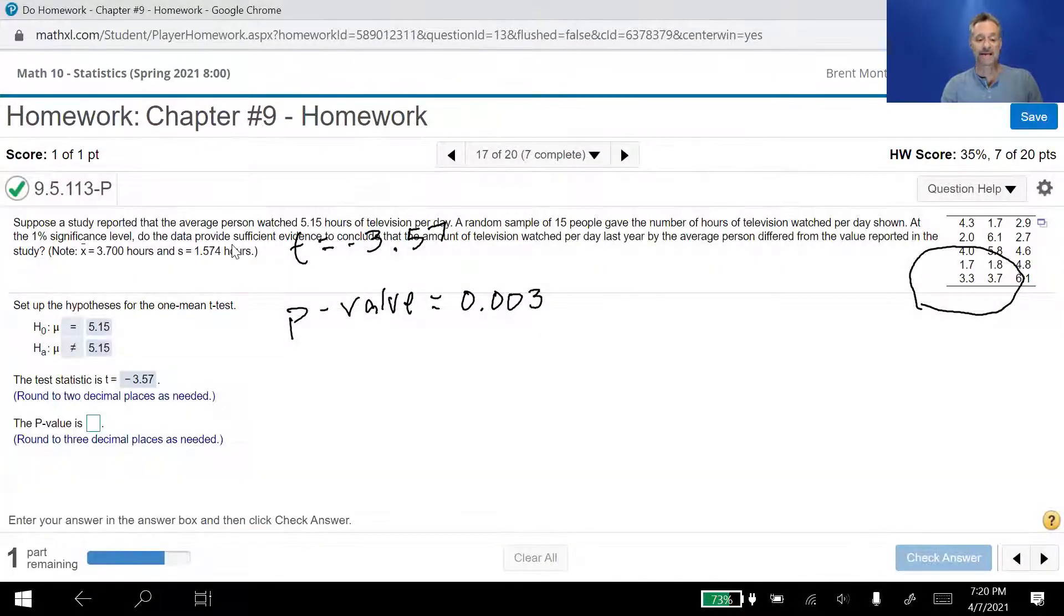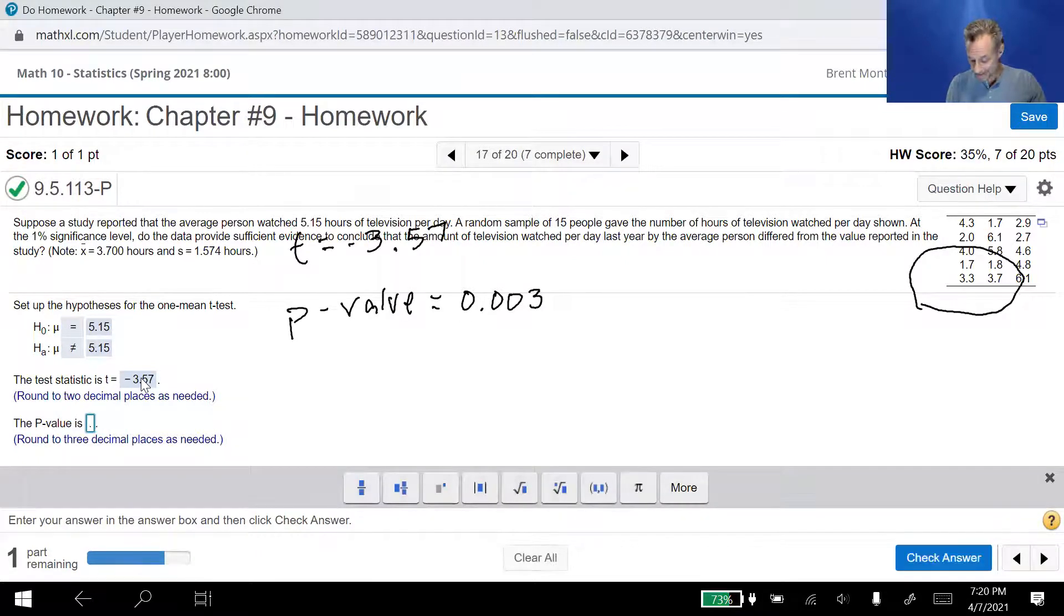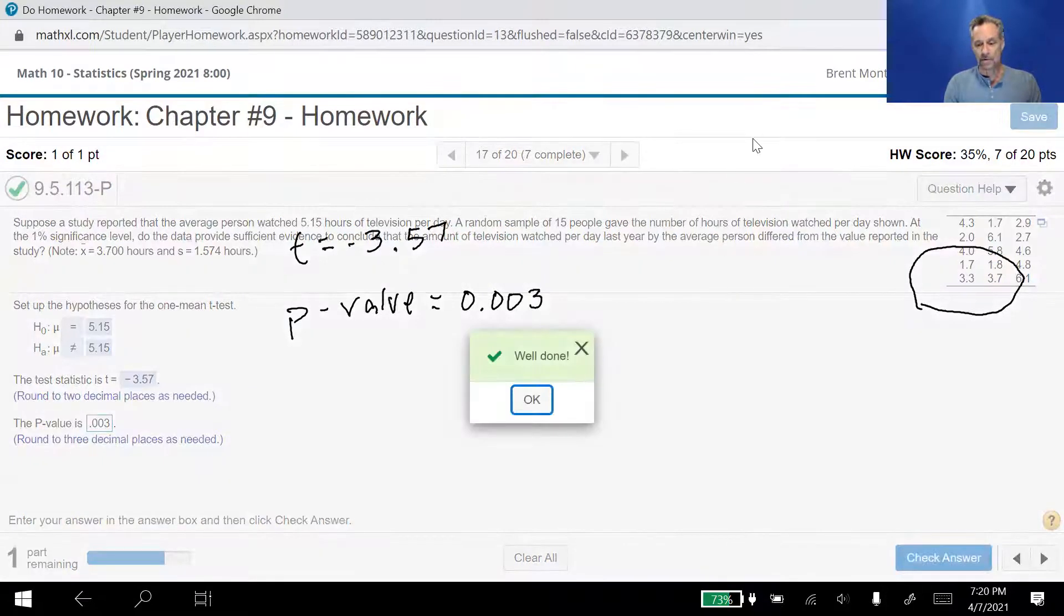And remember what that's saying is that data, the sample data, is 3.5 standard deviations below the mean. The P value is the probability that we would get the sample numbers or something more extreme if the null hypothesis were true. I like to just think of the P value as the probability the null hypothesis is true. That's not literally what it means, but it's very close. It's related to that. So there's almost no chance the null hypothesis is true. Let's go ahead and check that one. That one's correct as well.